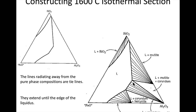So now we've got this isothermal section, and it's a little more clear when we're just looking at one temperature. If I have a composition here, it's going to be liquid. If I have a composition here, it's going to be liquid plus mullite; here, liquid plus mullite plus corundum, and so forth. So it's simpler — we're ignoring all the other temperatures that are of less interest to us in this case.